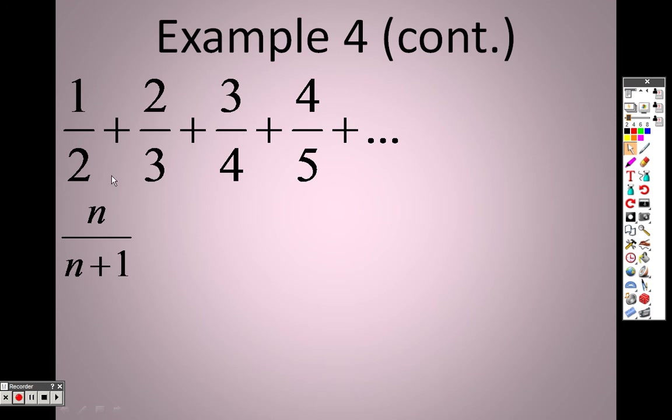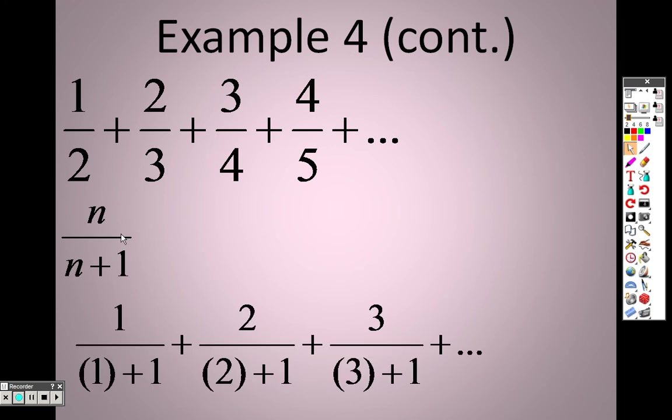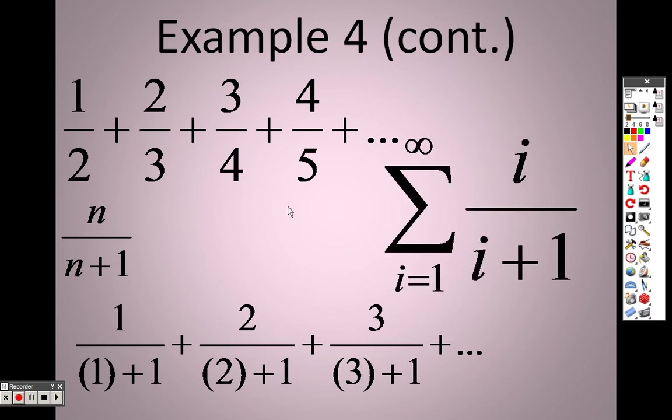If I plugged in a 2, it would be 2 over 2 plus 1 is 3. If I plugged in a 3, it would be 3 over 3 plus 1, which is 4. So you can see that that pattern does work. And notice how I start by putting in a 1, it works. If I plug in a 2, it works. If I plug in a 3, it works, and so on. So since I'm adding a whole string of numbers, there's a large sigma sign. We know it starts at 1 because it didn't specify, so I know that I always start at 1. Since there's dot dot dot, it ends at infinity. And this is the pattern that we found. So I put the pattern out in front.